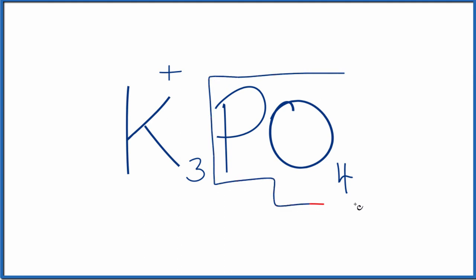PO4, this is the phosphate ion. It's one you need to memorize. The whole thing has a charge of three minus. It's a polyatomic ion.